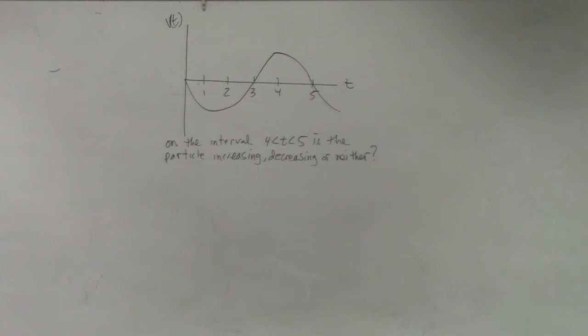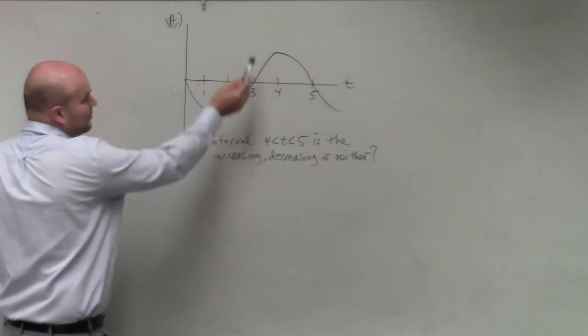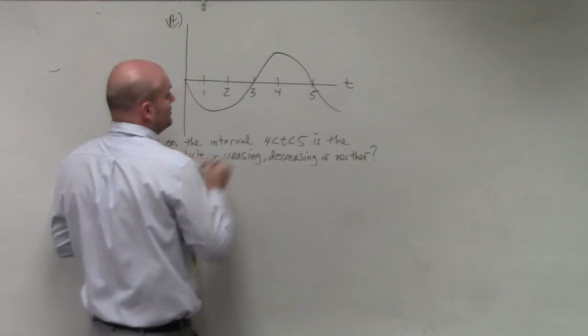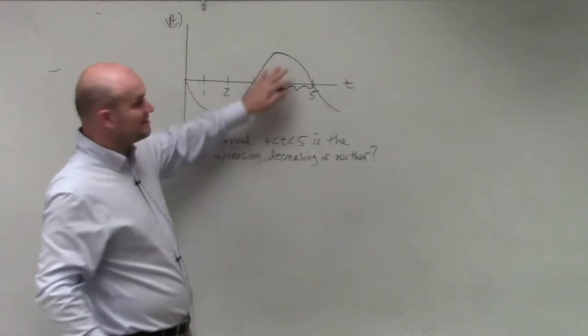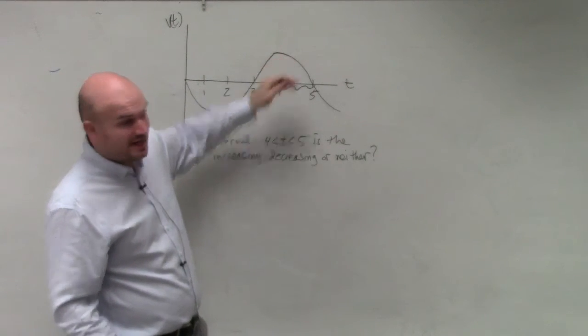So again, remember when we're looking at this, there's a couple different things that we want to write down. We know it's a velocity graph. We see that the velocity on this interval between 4 and 5 is going to be positive, but we also know that the acceleration is negative.